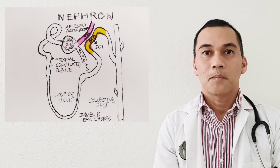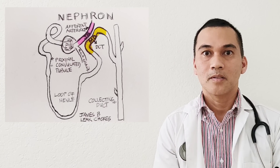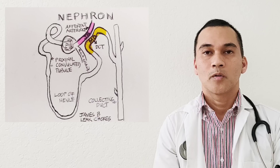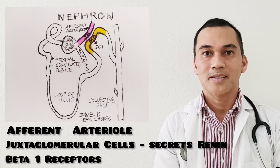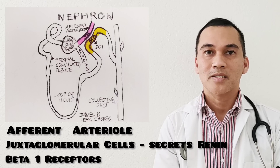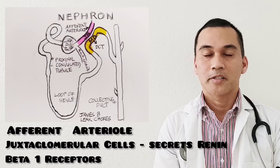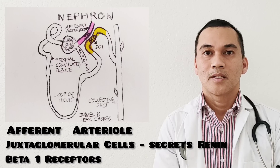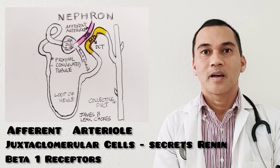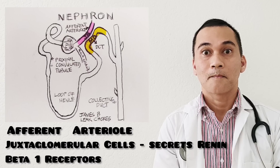The one in pink is the afferent arteriole. In the afferent arteriole, we will find the juxtaglomerular cells. And in the juxtaglomerular cells, we will find our beta-1 receptors. The juxtaglomerular cells are the ones that secrete renin.